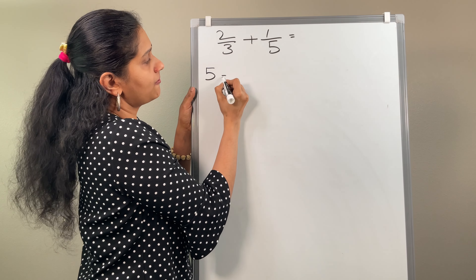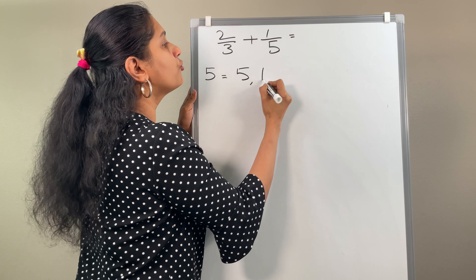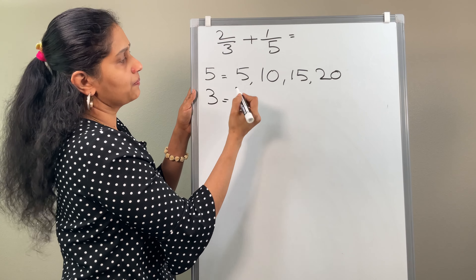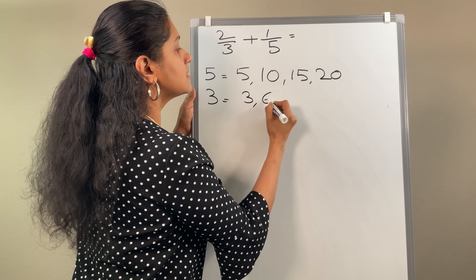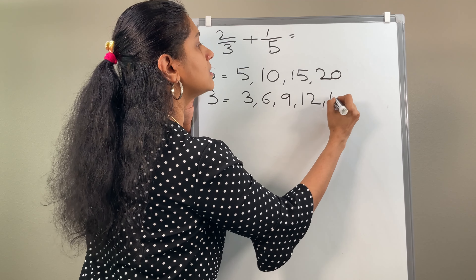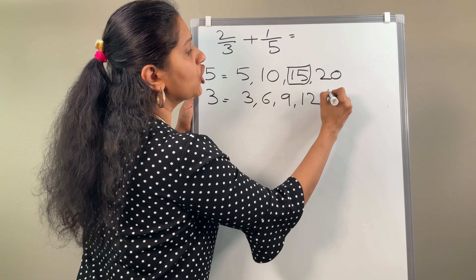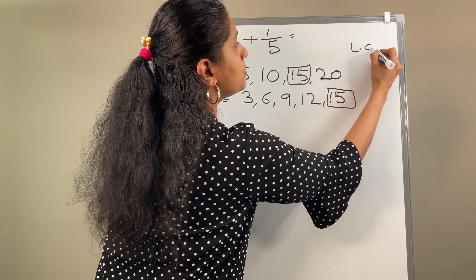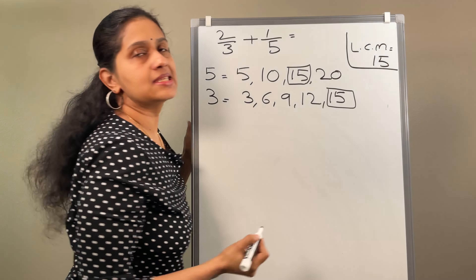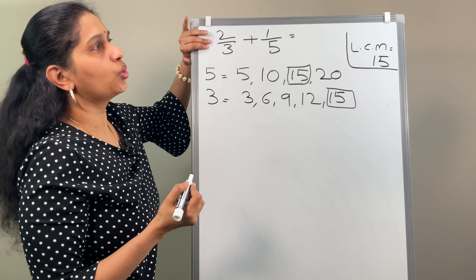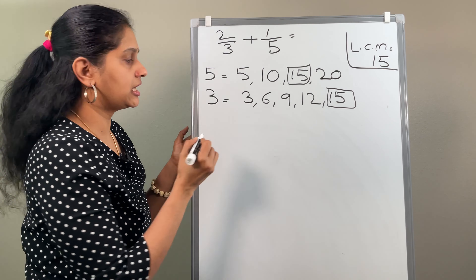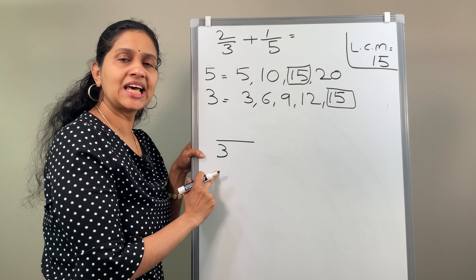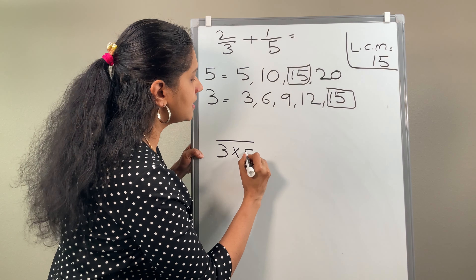Now consider the next example: 2 by 3 plus 1 by 5. First we need to find the LCM. Let us list the multiples of 5 first, the bigger number: 5, 10, 15, 20. Now list the multiples of 3: 3, 6, 9, 12, 15. The first common number is 15, so the LCM of 5 and 3 is equal to 15.